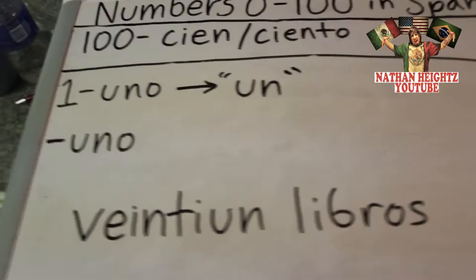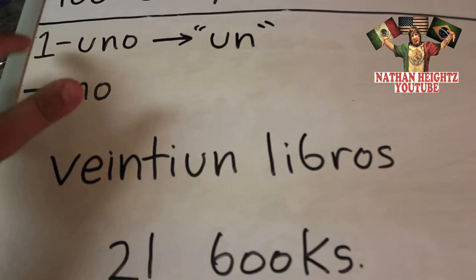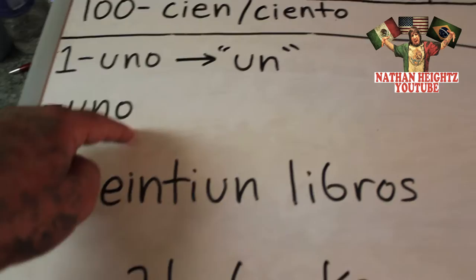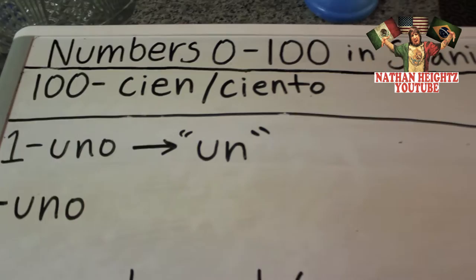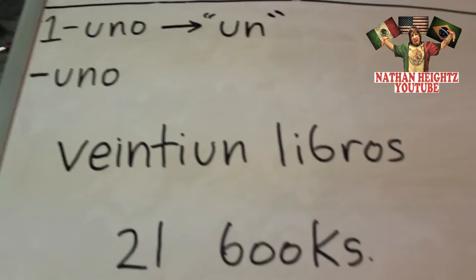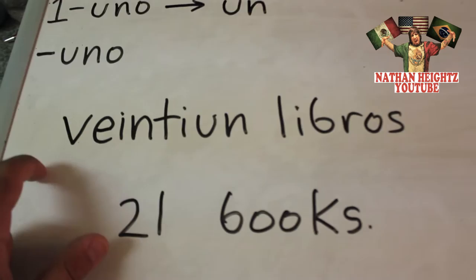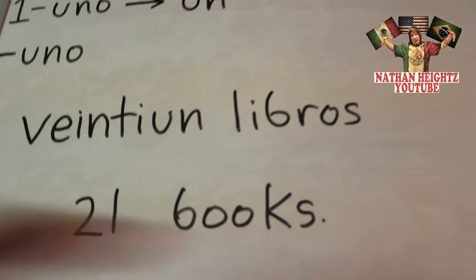One last afterthought — if you made it this far, you deserve to know this. Uno (1), and any number ending in uno, for example 21, change their ending to un when used before nouns. So if there's one book, you wouldn't say 'hay uno libro' — that's wrong. You would say 'hay un libro.' And with numbers like 21, if you want to say there are 21 books, you say 'hay veintiún libros.' Keep that in mind.